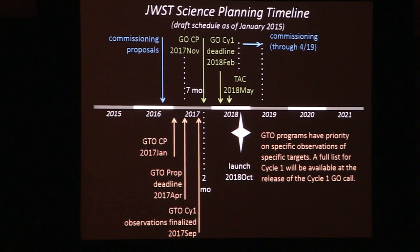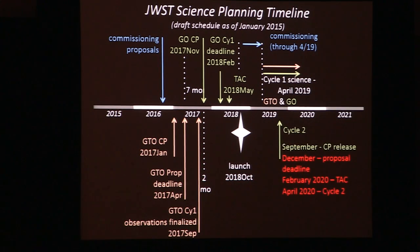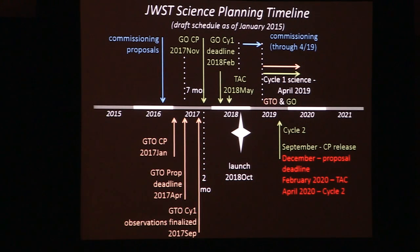The cycle one schedule for general observers: the deadline is February 2018, TAC happens in May, and science observing starts April 2019. We're anticipating annual observing cycles, so the cycle two call goes out September 2019, deadline probably December, TAC February, and start observing April 2020. All of these are draft schedules we're working to — I don't anticipate them changing much, but it's a draft.